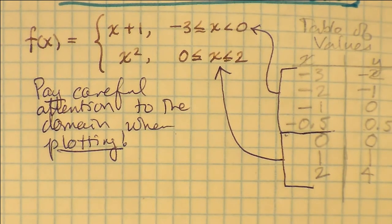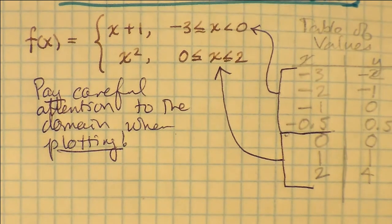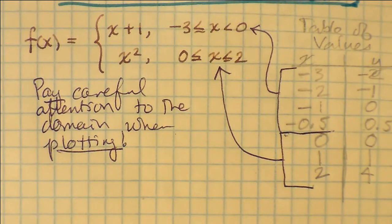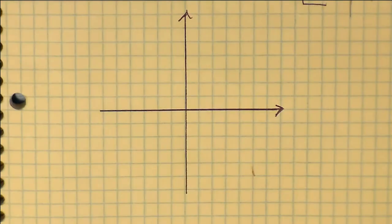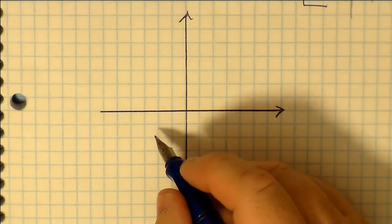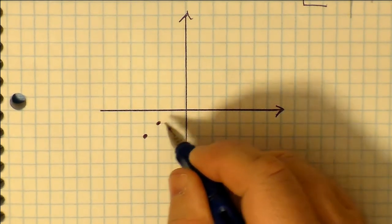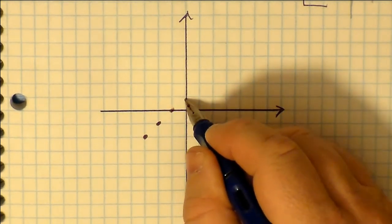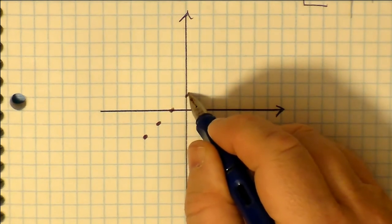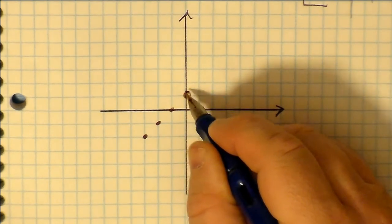You're going to expect there to be breaks in the function. And there may well not be any breaks, but you're probably going to expect them. So let's just plot the points that we just described in our table on this Cartesian graph.